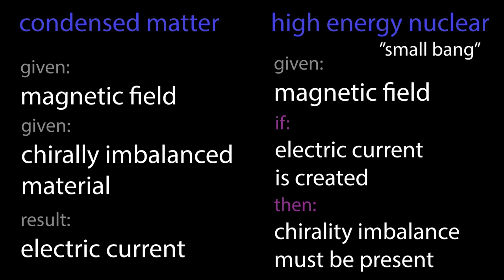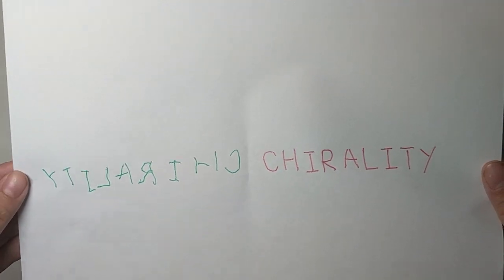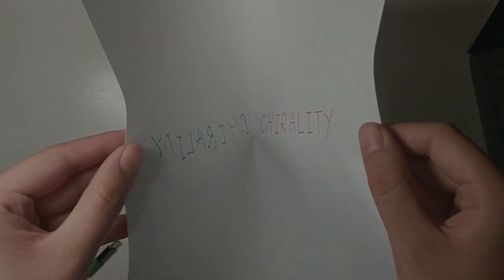And since these small bangs are very similar to the big bang, discovering the existence of chirality imbalance in these experiments can help physicists understand how similar processes have also created imbalances in our real world.